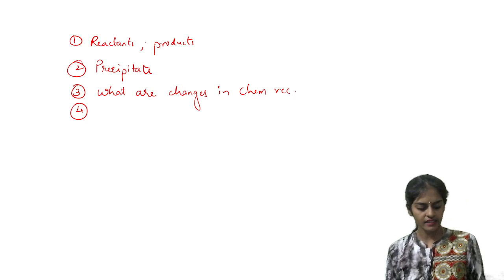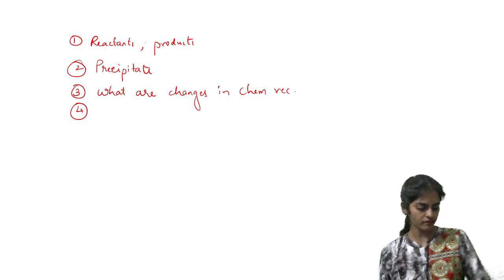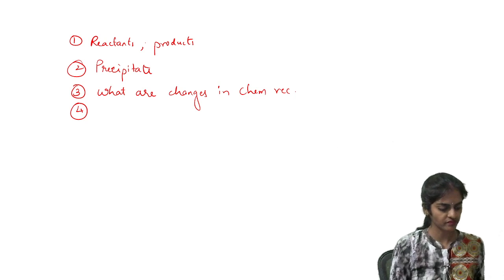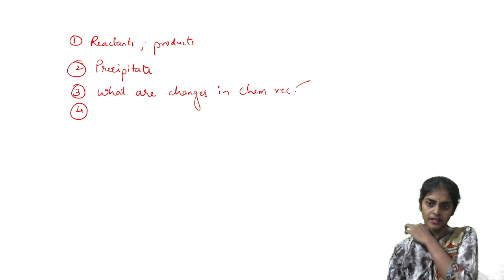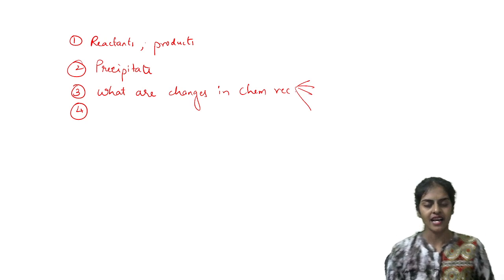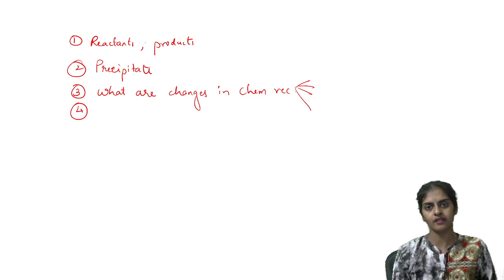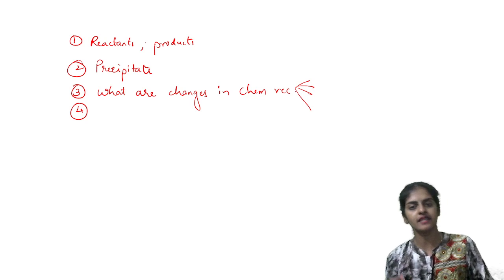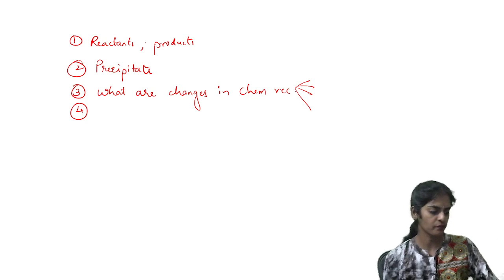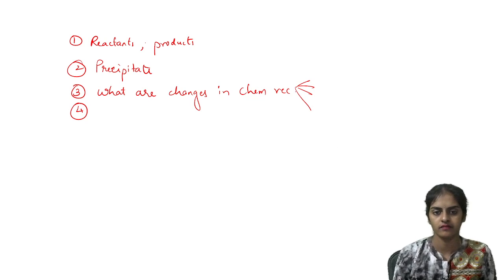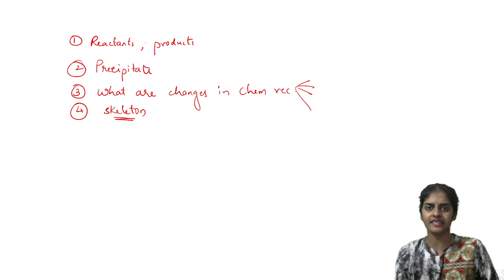So here are the four points: physical state may be changed, heat may be liberated or absorbed, gas may be evolved, and precipitate formation. And what is the skeleton reaction? Skeleton reaction is balanced.